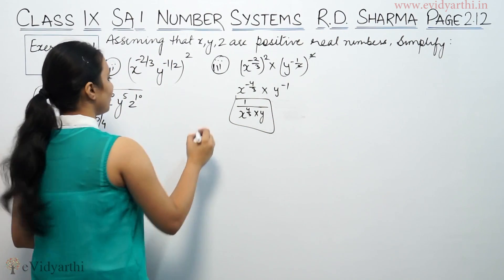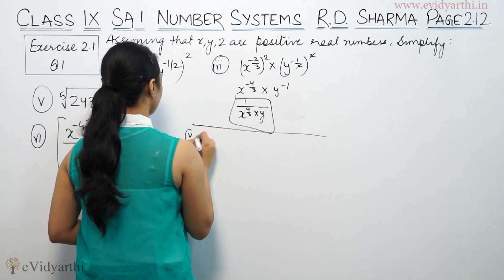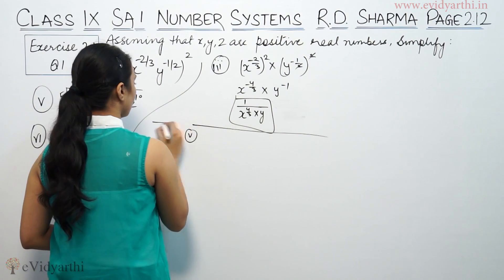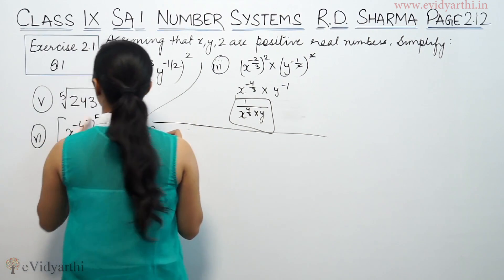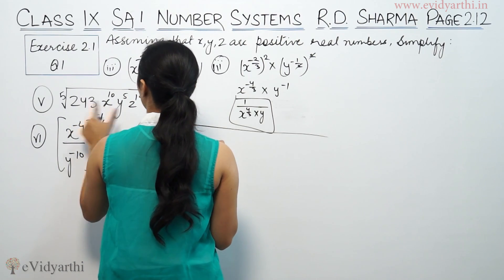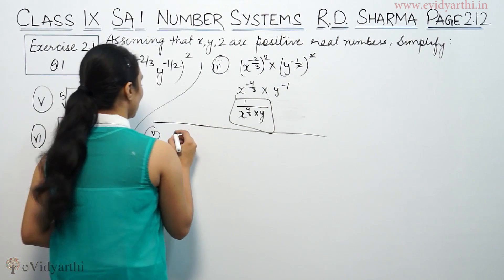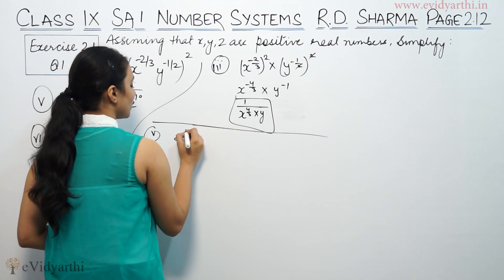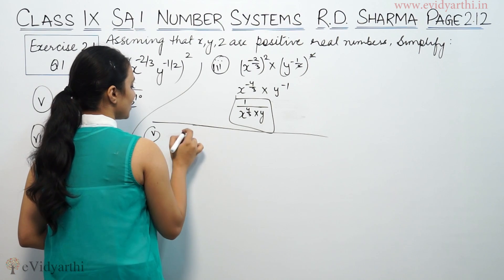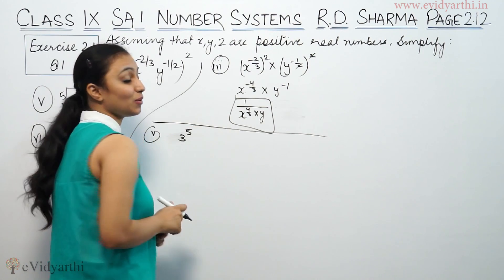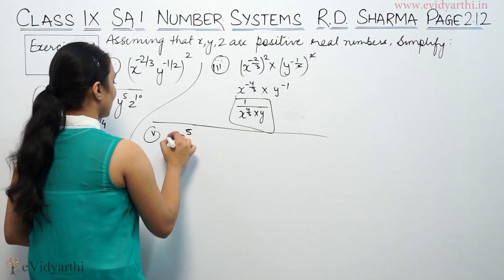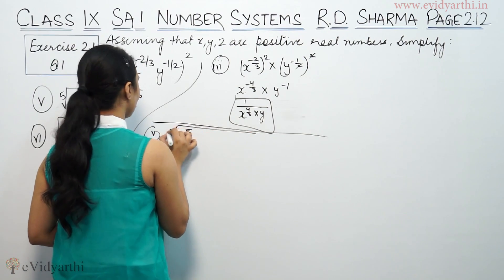Similarly, part (ii), we have given 243 X^10 Y^5 Z^10, whole raised to the power minus 1/5. So we have 243, whole raised to the power minus 1/5 multiplied.